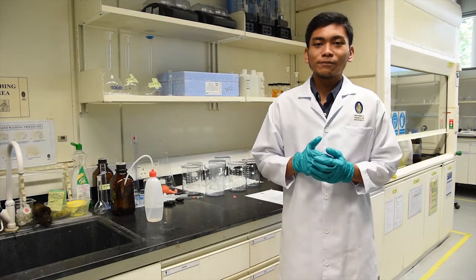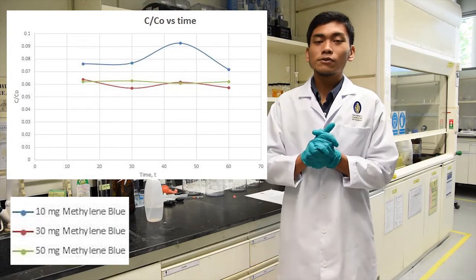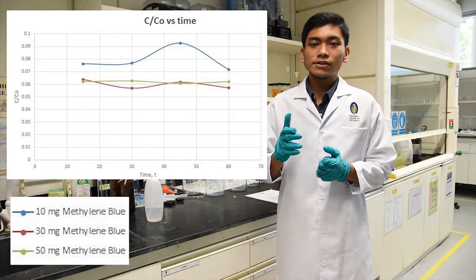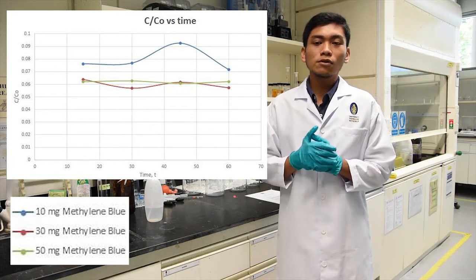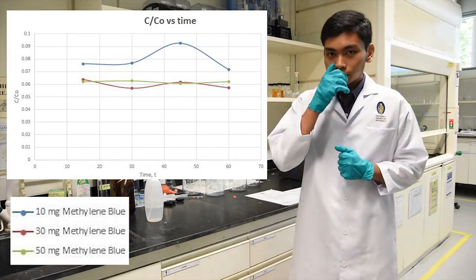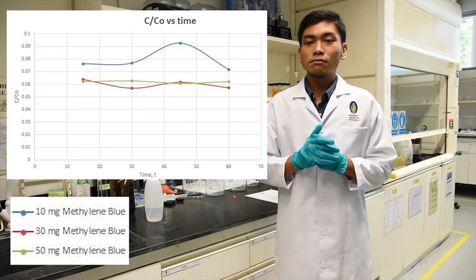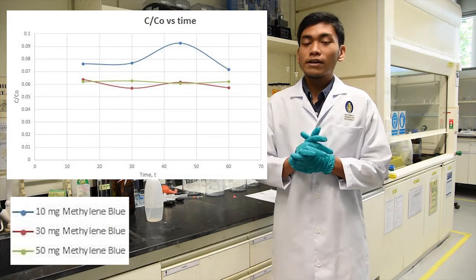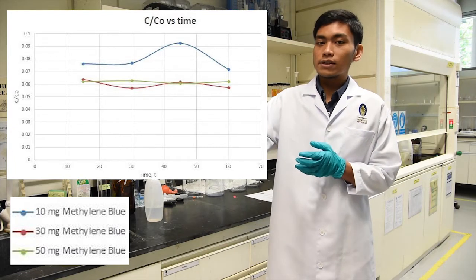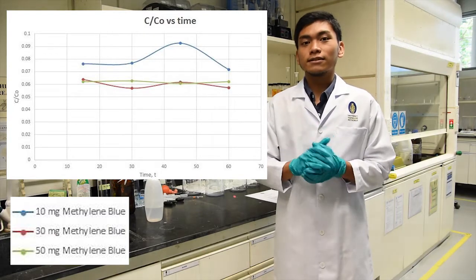In the third graph, C over CO versus time is plotted to find the breakthrough point. A breakthrough point is a point whereby the adsorbent reached its saturation point and could not absorb any more solvent unless it is reactivated or replaced by a new adsorbent. Based on the graph here, for 10 mg per liter of methylene blue in the solution, breaking point is found at t equals to 13 minutes since at t equals to 13 minutes onward, the concentration of the methylene blue is increasing again, which means desorption starts to happen.